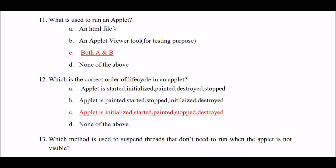What is used to run an applet? Option A: an HTML file. Option B: an applet viewer tool, for testing purposes. Option C: both A and B. Option D: none of the above. The right answer is Option C, both A and B — an HTML file and an applet viewer tool are both used to run an applet.